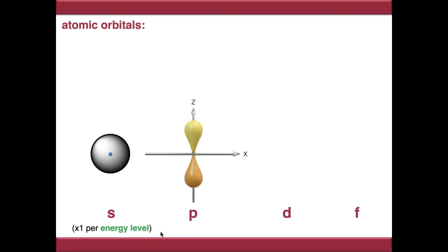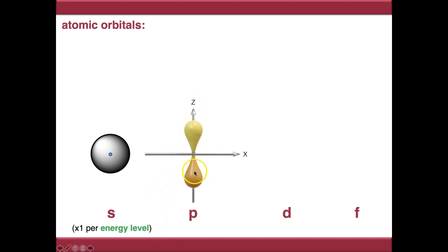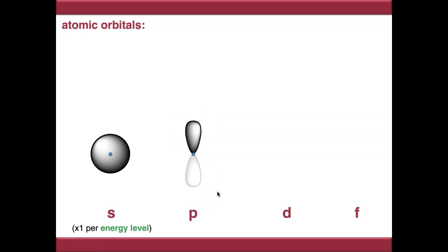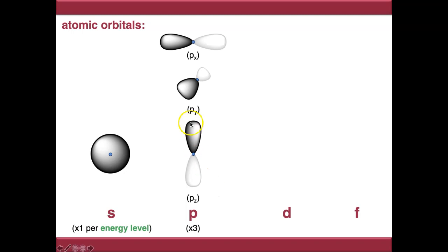P orbitals are shaped like a dumbbell or a figure of eight. They're symmetrical around the axis in which they're pointing, but they have two lobes which are in opposite phases. There are three P orbitals per energy level, and they point in the Cartesian coordinates — Pz, Py and Px — so they're all mutually orthogonal to each other, pointing at 90 degrees relative to each other.